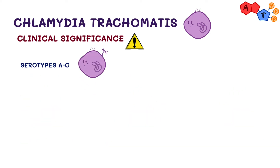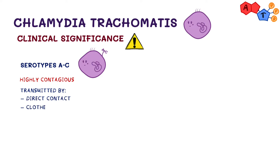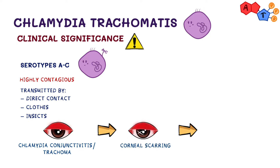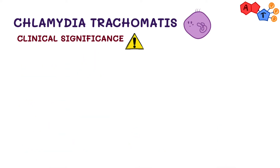Serotypes A to C are highly contagious and are transmitted by direct contact, clothes, or insects. These serotypes cause chlamydial conjunctivitis, also known as trachoma, and untreated infection will result in corneal scarring which can lead to total blindness.